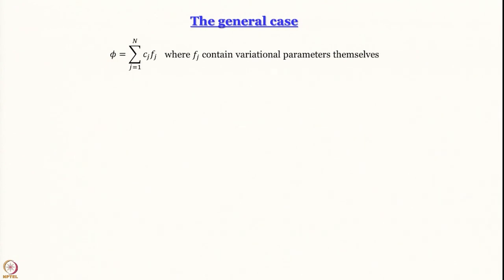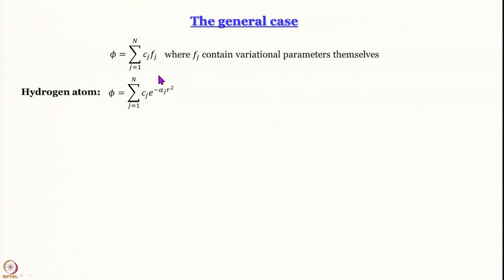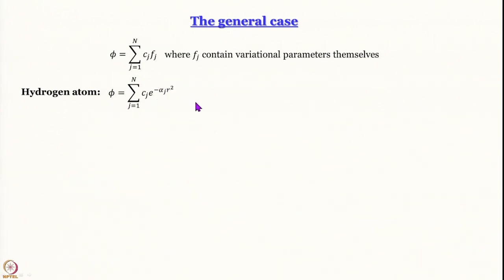In the general case, variational parameters can also appear within the orthonormal functions themselves, not just as the linear combination coefficients. For hydrogen atom, one can write the trial function as Σⱼ cⱼ e^{−αⱼr²}, where αⱼ are also variational parameters. This additional flexibility allows greater optimization of the energy.